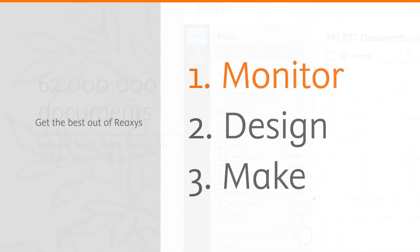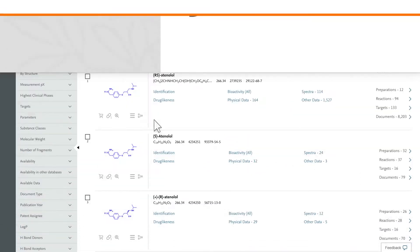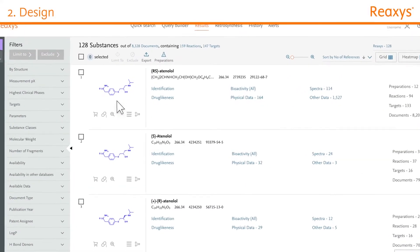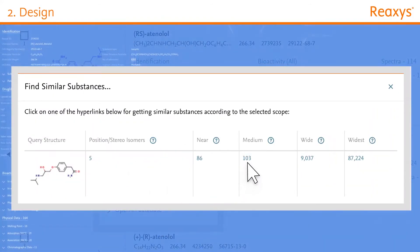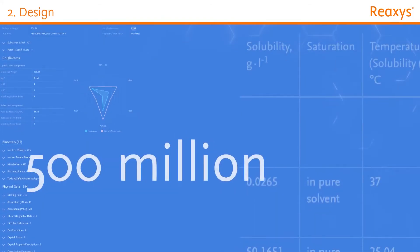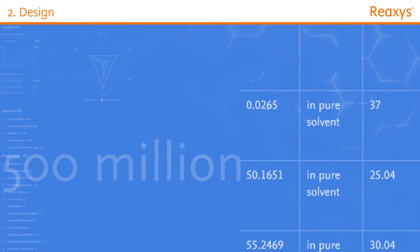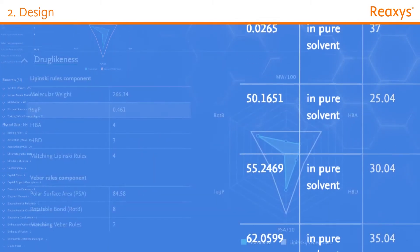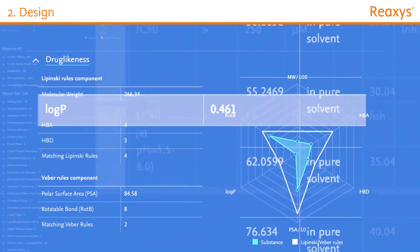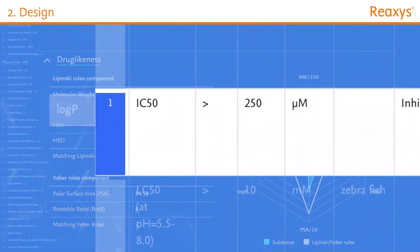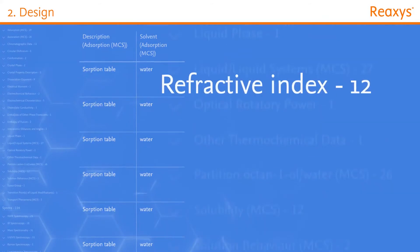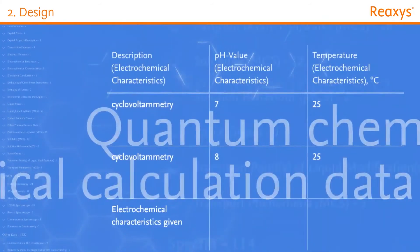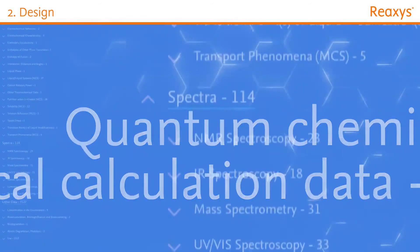All set to start your work? Designing new compounds is simple with ReAxis. Explore the known chemistry for your substance of interest with a similarity search and leverage over 500 million experimental data points. Screen for compounds with desired solubility, log P, or IC50 data. Find adsorption, refractive index, electrochemical characteristics, quantum chemical calculation data, and much more.